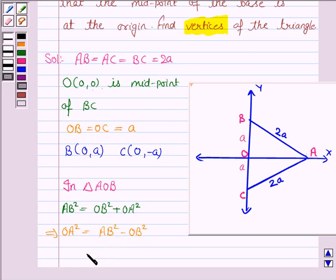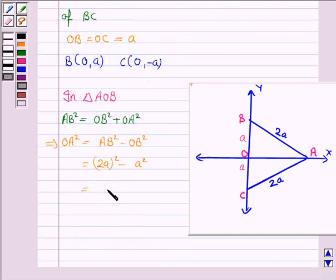AB is 2a, therefore AB squared is (2a) squared, and OB is a, therefore OB squared is a squared. This equals 4a squared minus a squared, which equals 3a squared. Taking the square root on both sides, we have OA equals plus or minus root 3a.